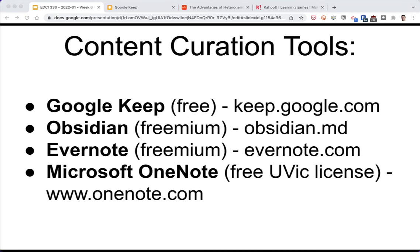It's free to use. It's a Google product, so you need to keep that in mind, but it may be what your school district uses. Obsidian is a freemium application that charges for synchronizing between devices. Evernote is another freemium — the basic version can do pretty much everything, and after you have a certain amount of content you have to pay a little bit for storage. Microsoft OneNote comes with the Office suite and is free for UVic students, faculty, and staff through the UVic site license.